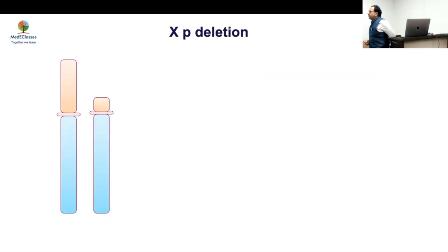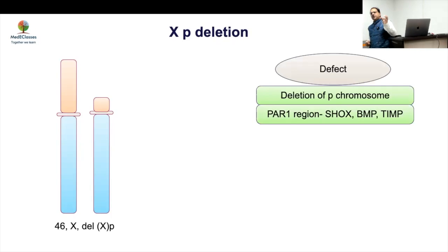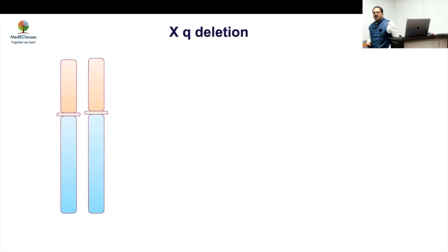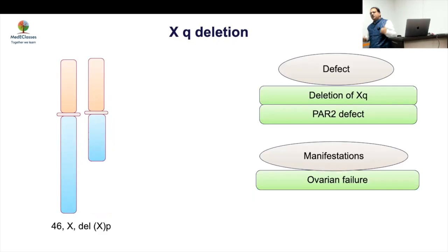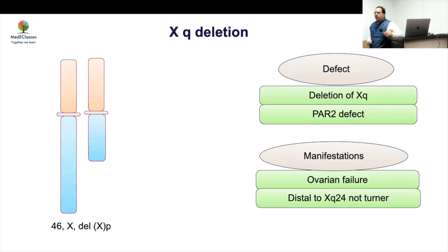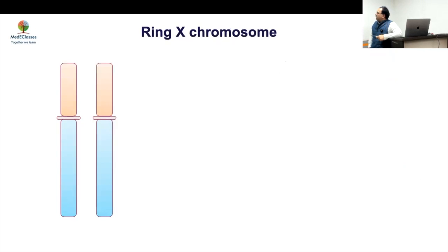With an XP deletion, part of the P chromosome is deleted and the manifestations depend on how much is deleted. If PAR1 is affected, there will be short stature, cardiac effects, and effects on ovarian function. XQ deletion allows patients to escape most Turner syndrome effects; these patients mainly present with ovarian failure because this is the fragile X pre-mutation site. If the deletion is distal to Xq24, it would not even be labeled Turner syndrome but rather premature ovarian failure.